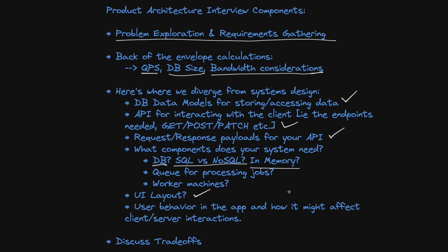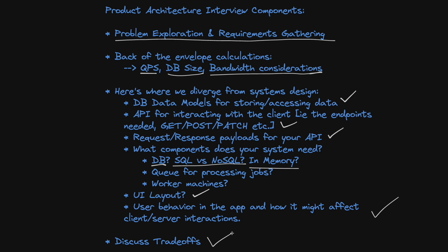You also want to talk about user behavior in the app — how are they going to use and interact with it — and how this affects your design decisions, including client and server interactions. If the user does something, what are you going to do on the client side and on the server side? How are you going to fetch that data and make sure it's a good experience? As you go along, you need to discuss trade-offs: I chose this database instead of that one because it allows me to query data faster, giving my user a better experience. There's no right answer — you just need to justify what you're doing and tie it back to the question prompt.